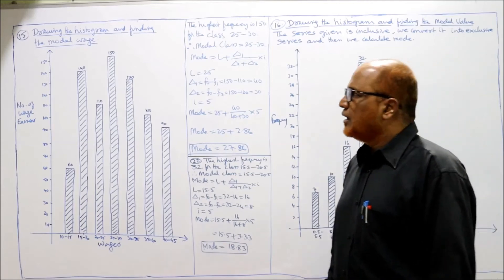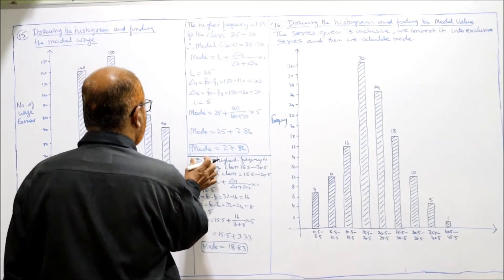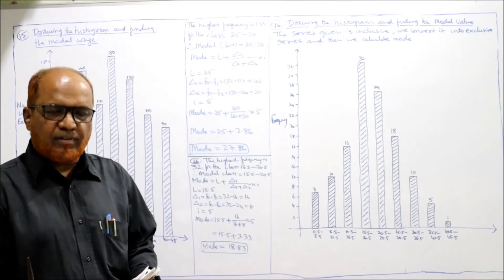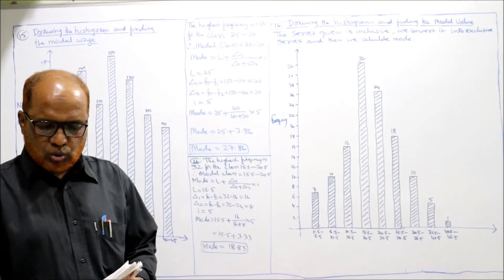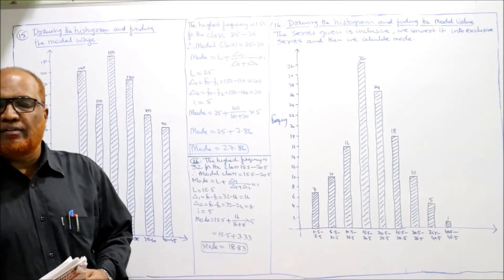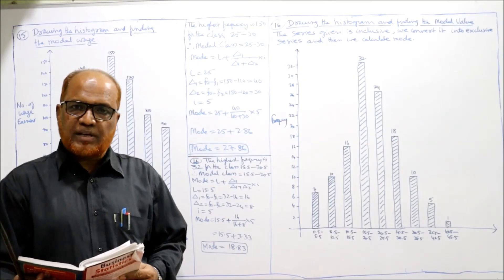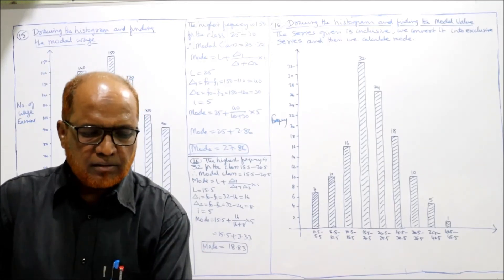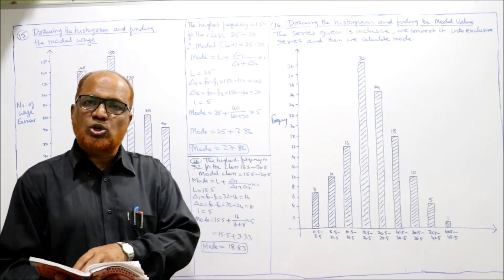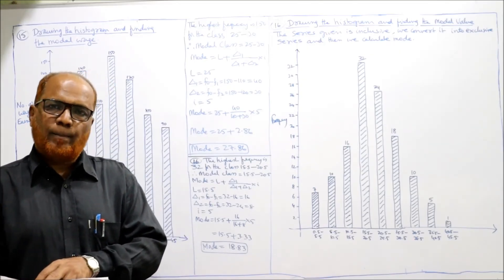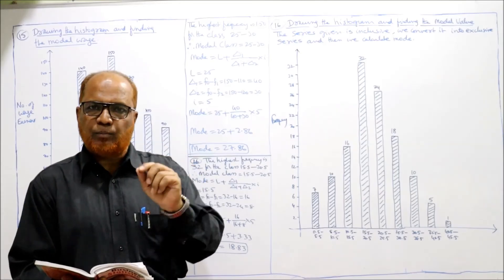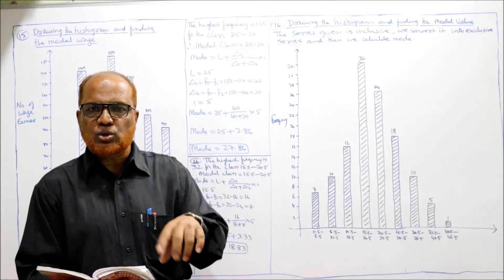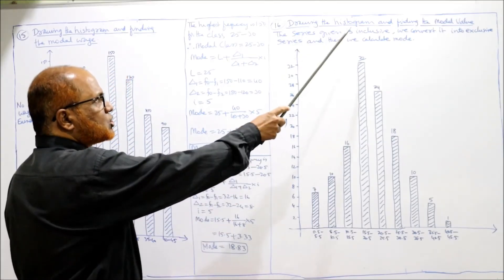Problem 16: construct a histogram and find the modal wage. Marks are given as 1 to 5, 6 to 10, 11 to 15 — it is an inclusive series. Before calculating mode, we convert it into exclusive series. Lower limit is 1, before 1 is 0, so (0+1)/2 = 0.5. So the class becomes 0.5 to 5.5, then 5.5 to 10.5, 10.5 to 15.5, and so on. We have converted the inclusive series into exclusive series.